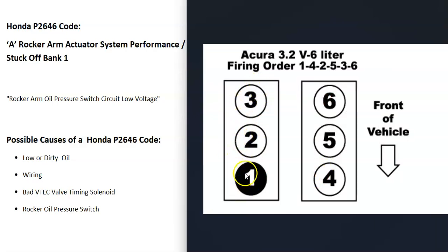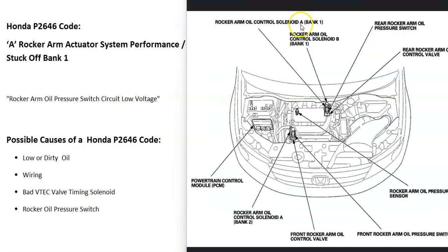If you have a V6 engine, bank one is always the side of the engine with the number one cylinder, and the opposite is bank two. A four-cylinder wouldn't matter — they only have one bank. But if you have a V6, find the number one cylinder; that side is bank one and the side of the engine that's having the issue.